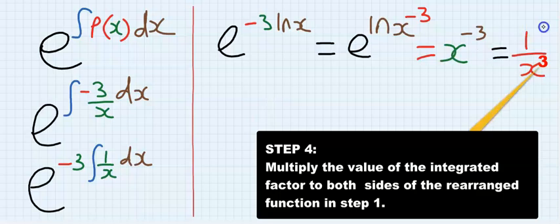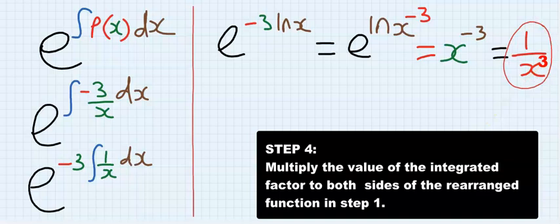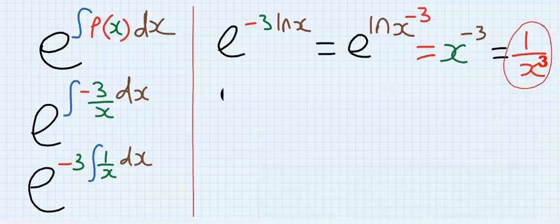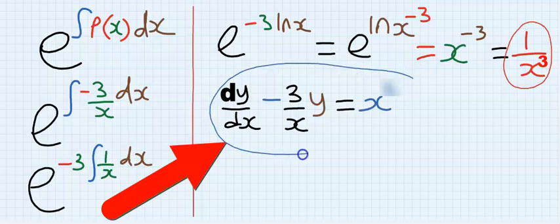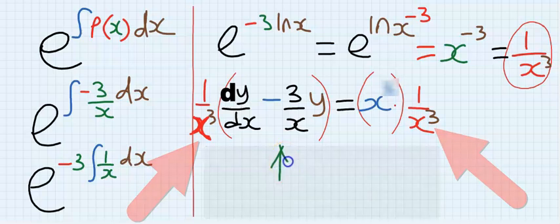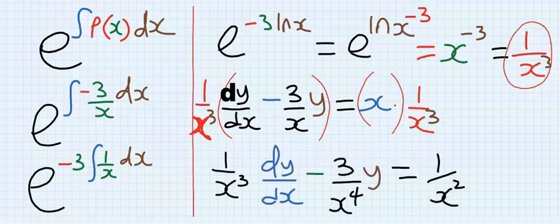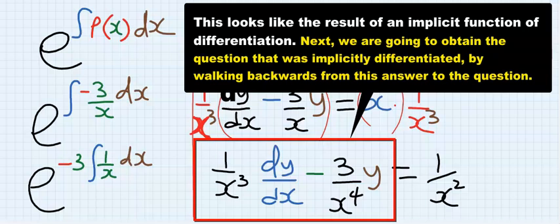Next is step number four. Multiply this integrating factor to both sides of the given question, not just the given question but the rearranged standard form. Next, expand this bracket by using this to multiply this and this to multiply this. This we cancel. This is the challenging area of integrating factor method. We are going to work backwards to get the question that gave us this.